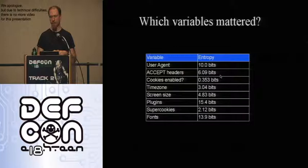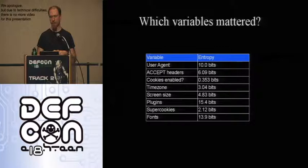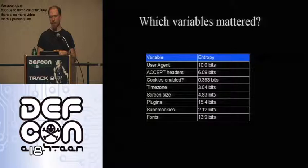Looking at the variables we measured: which ones were most problematic? The user agent string is pretty bad — it gives 10 bits of information. Every time a user agent is logged on a web server, you're narrowing the population to one-thousandth of what it could have been. But even worse are plugins at 15.4 bits, and fonts at about 14 bits. These are things your browser publishes that are very revealing.